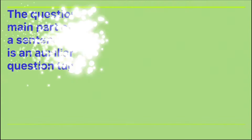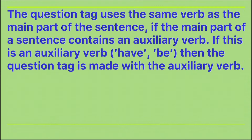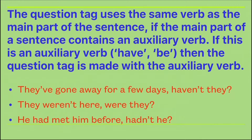The question tag uses the same verb as the main part of the sentence. If the main part contains an auxiliary verb, the same auxiliary verb is used in the question tag — whether have or be, we use the same auxiliary verb. For example, 'They have gone away for a few days' — the question tag is 'haven't they.' Another example: 'They weren't here' — the tag is 'were they,' since 'were' is the past form of the be-verb.